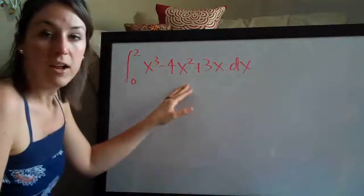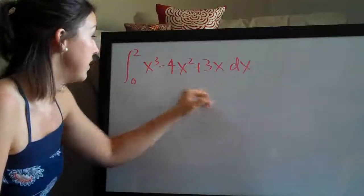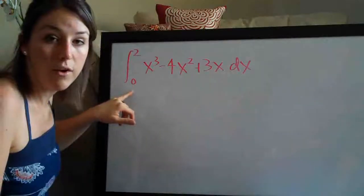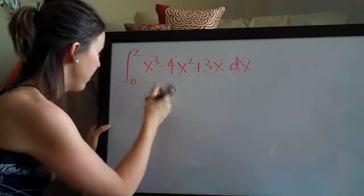So as always with definite integral problems, two steps: the first of which is to take the integral, the second of which is to evaluate on the range 0 to 2. So first we're taking the integral and let's go ahead and do that now.